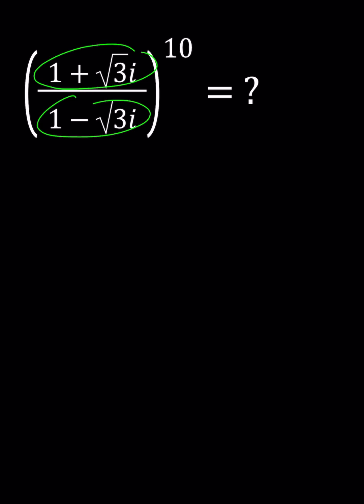1 plus root 3i, its modulus is 2, the absolute value. So we can write it as 2 times e to the power i pi over 3 using Euler's formula.